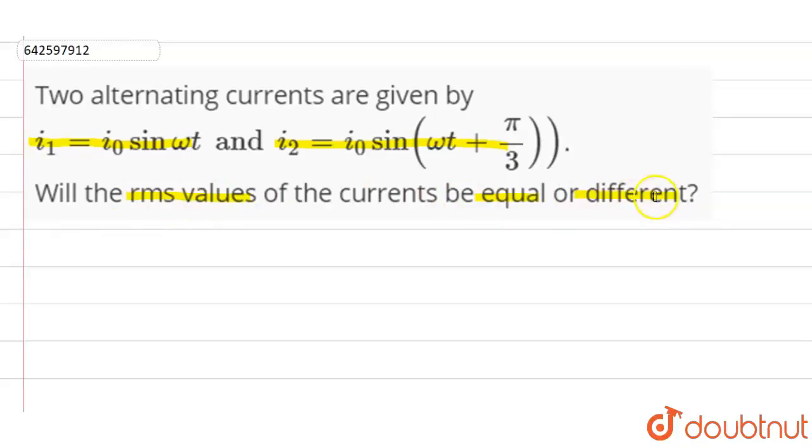Before we solve this question, let us first discuss the key concept that we need to know. The key concept here is the formula for RMS value of the current. So I_RMS is given as i₀/√2, where i₀ is the peak value of the current and √2 is a constant.